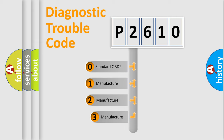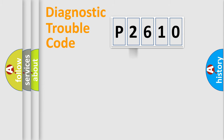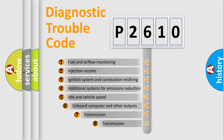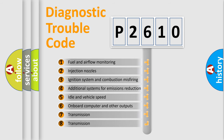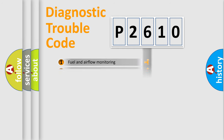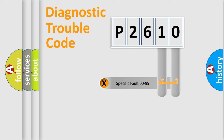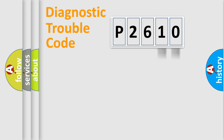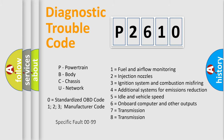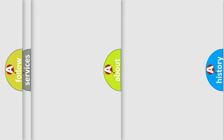If the second character is expressed as zero, it is a standardized error. In the case of numbers 1, 2, or 3, it is a more specific expression of a car-specific error. The third character specifies a subset of errors. This distribution is valid only for the standardized DTC code, and only the last two characters define the specific fault of the group. This division is valid only if the second character code is expressed by the number zero.